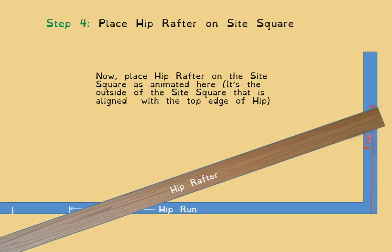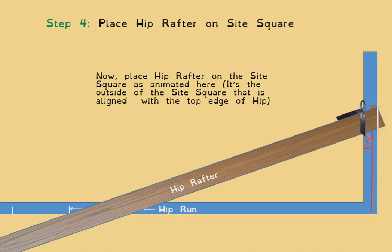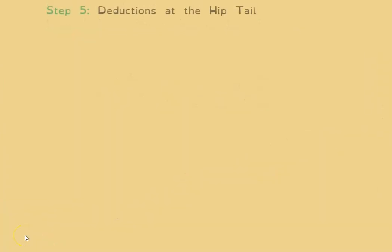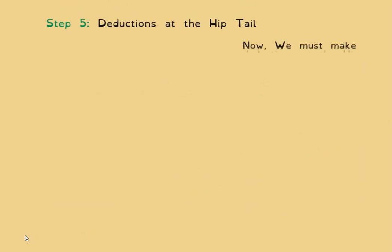Once the hip is correctly positioned on the site square, get your bevel and swing the blade out to line up with the rise leg of the square — that's your hip plumb cut angle. Slide the bevel down to mark the plumb line at the bird's mouth position, then slide it again to the fascia point and draw the third plumb line. So you now have three plumb lines drawn on the side of the hip.